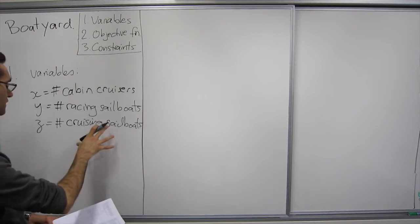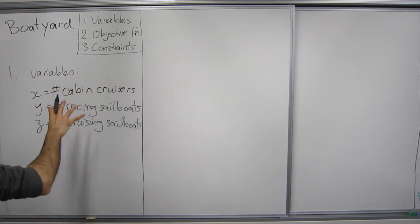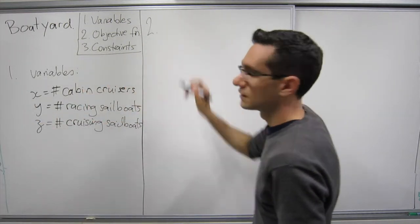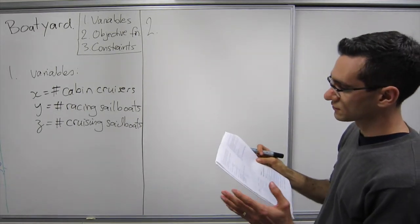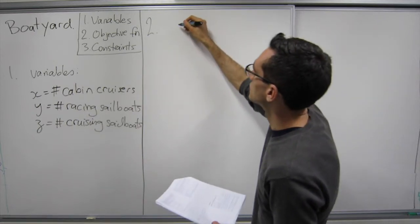So these are the variables that we're interested in and the objective function will be a function of these variables. So secondly we want to find the objective function. We can read off where we're looking to maximize the annual profit so the objective function